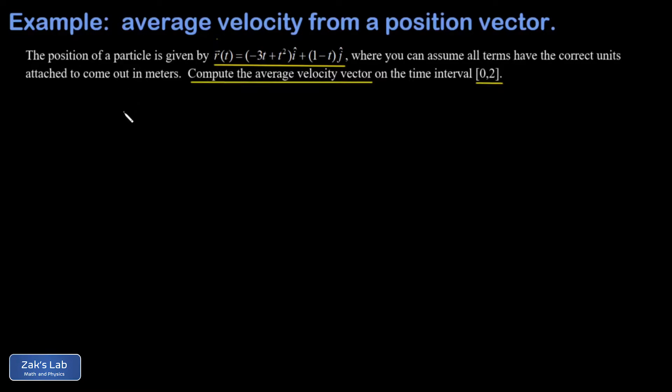So just a quick reminder, the average velocity vector, just like in one dimension, is given by the change in position. That's also called the displacement, divided by how long it took, and that's delta t.